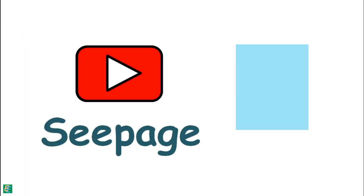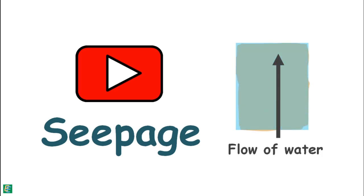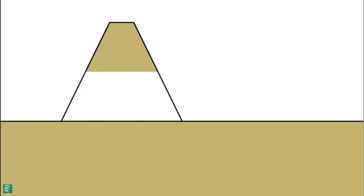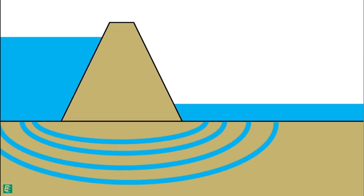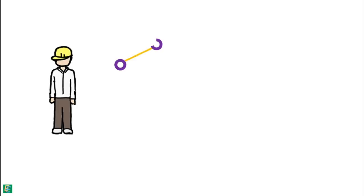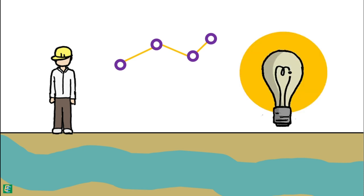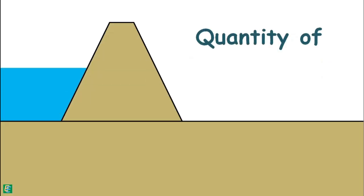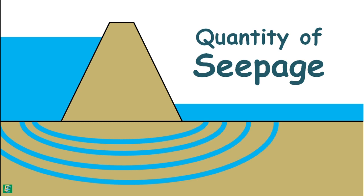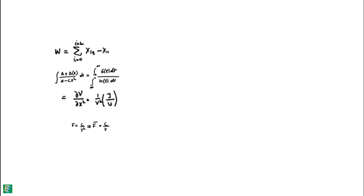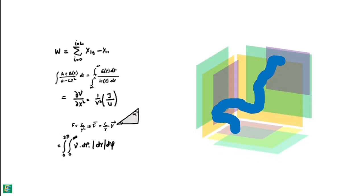In the previous video on seepage, we considered only unidirectional and linear flow of water inside the soil mass. But in many soil engineering problems, like the flow in soil under masonry dams, flow is multidimensional. As a soil engineer, our aim is to analyze the flow of water inside the soil. One such problem is to estimate the quantity of water percolating via seepage through the soil under a dam. To solve such problems and analyze multidimensional flow in soil, we make use of a concept called flow net.